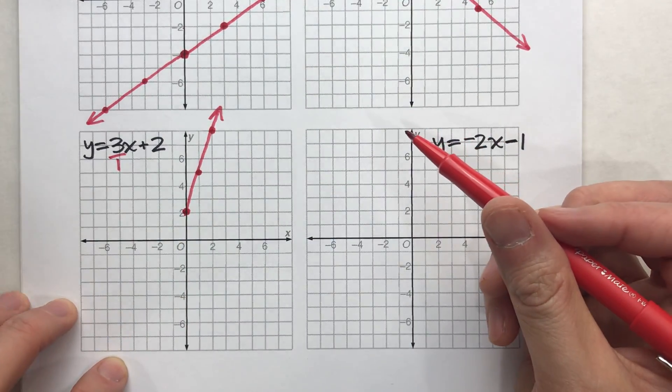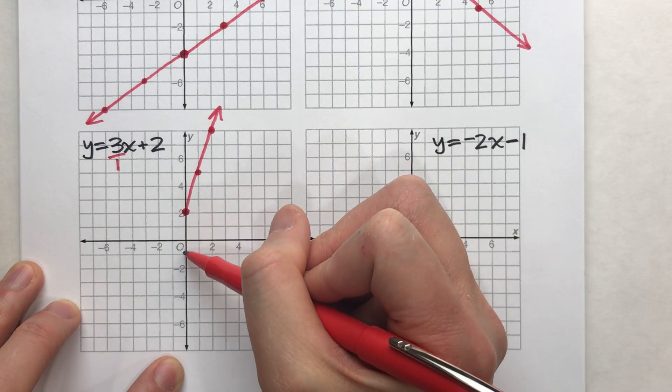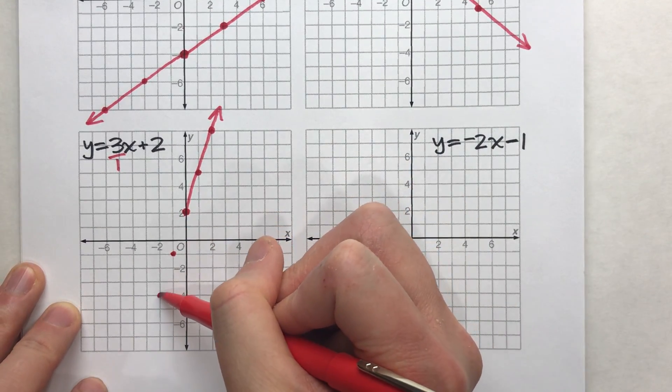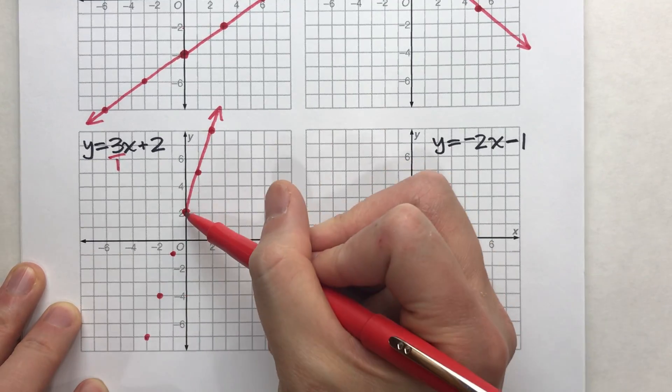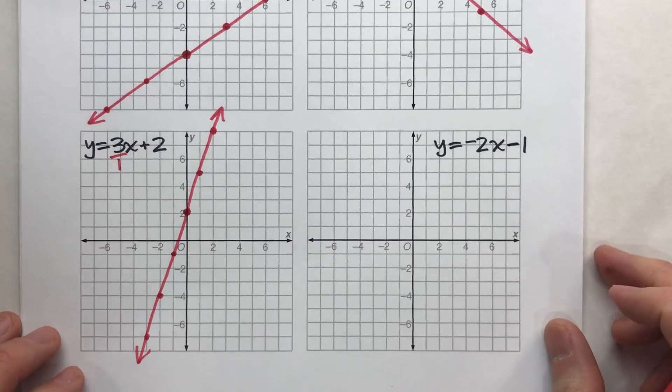So that's what my graph would look like. And I should do the other half. So I'll go down three, back one. Down three, back one. Down three, back one. And there's the other half of my line. And there's my graph.